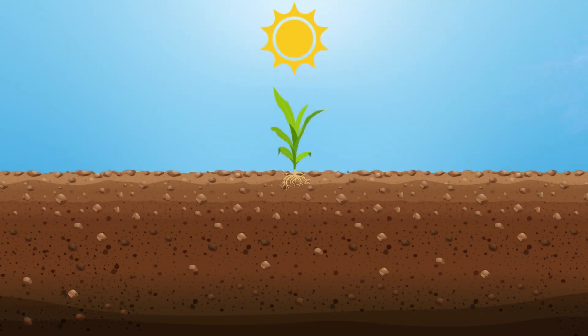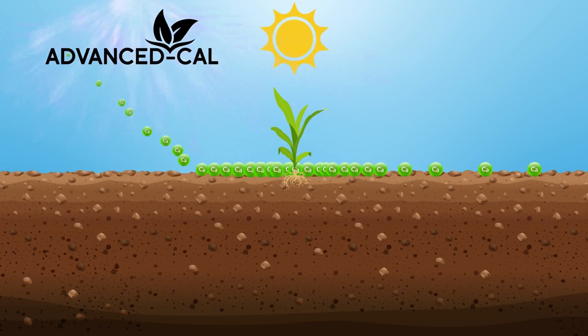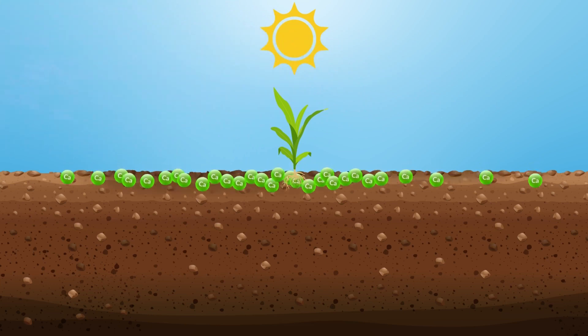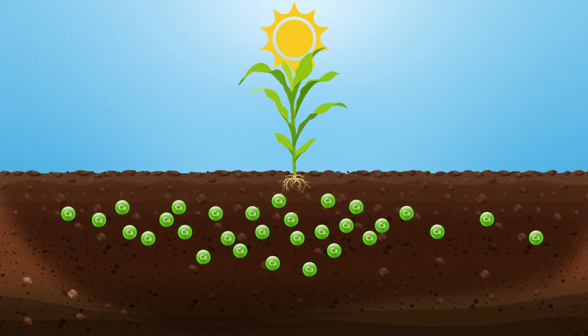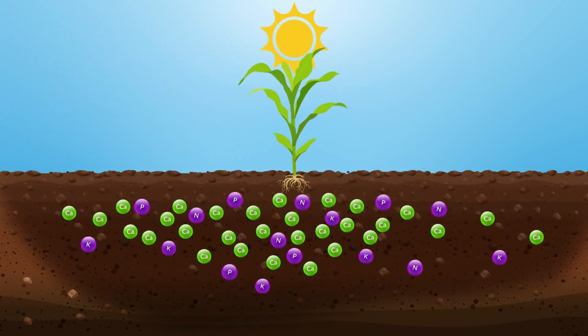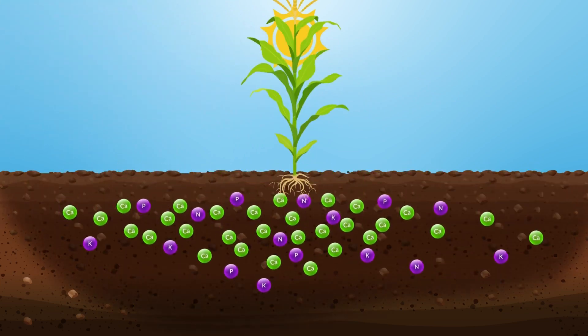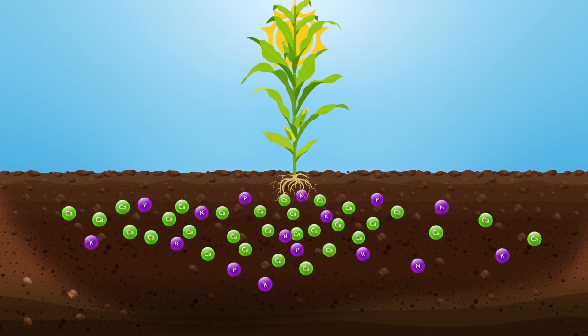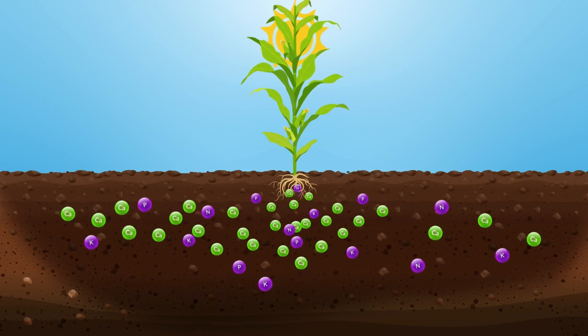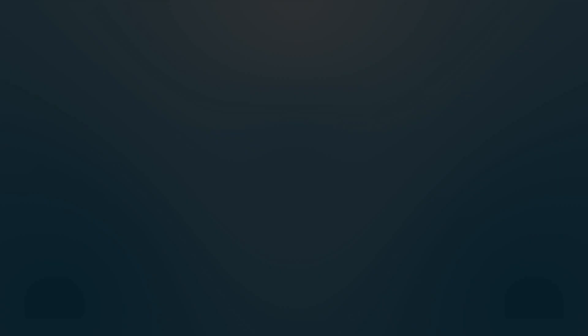Advanced Cal bioactivated liquid calcium has been shown to be more reliable and precise. It neutralizes soil acidity and balances pH, increasing the movement of NPK into the plant.